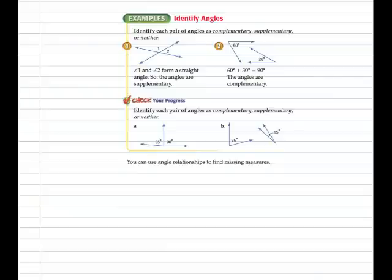Identify each pair of angles as complementary, supplementary, or neither. Angle 1 and Angle 2 are considered supplementary because together they equal 180 degrees. They are also adjacent angles. In Example 2, 60 degrees and 30 degrees added together is 90 degrees. Therefore, the two angles are complementary, though they are not adjacent.